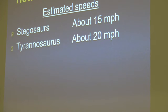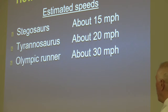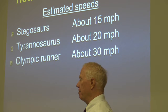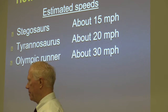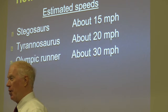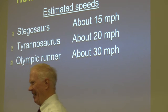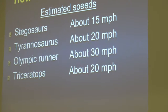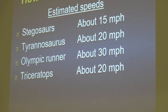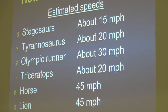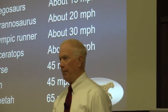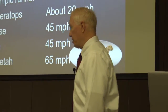Stegosaurus we believe ran about 15 miles an hour. Triceratops, maybe 20 miles an hour. Again, these are only our best guesses because we have not seen them run. Modern animals: horse, 45 mph; lion, 45 mph. The fastest land animal? The cheetah — they can achieve speeds up to 65 miles an hour, but only for a very short time, because like us, they get tired and slow down too.